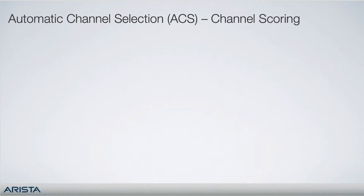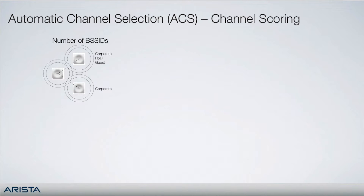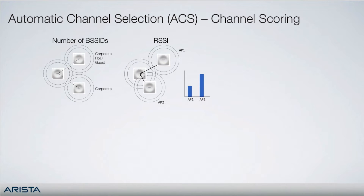Candidate channels are chosen based on an aggregate score of the following criteria. First, number of BSSIDs — more BSSIDs means more contention among APs on that channel. This takes into consideration the situation where a lightly loaded BSS will still use the airtime with beacons and other management frames. Second, RSSI — a neighbor whose RSSI is high is more likely to be physically close, so it would be best if we don't select the same channel.